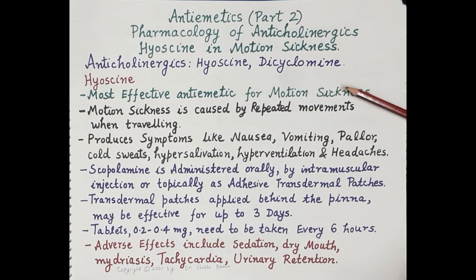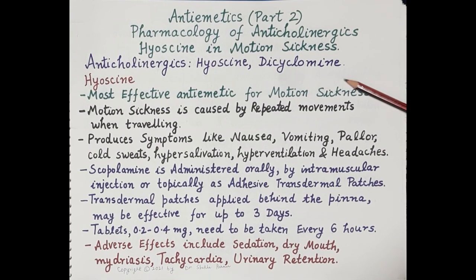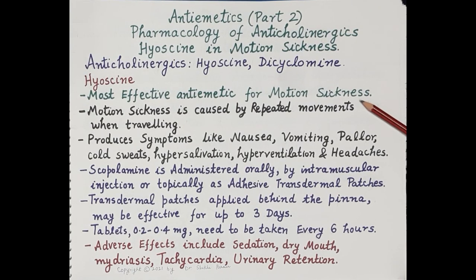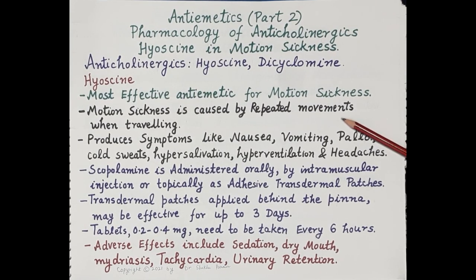Hyoscine is an anticholinergic — a non-specific muscarinic antagonist of acetylcholine at all muscarinic receptors. Hyoscine is the most effective anti-emetic for motion sickness, which is also called travel sickness. Motion sickness is caused by repeated movements when traveling, for example by train, bus, airplane, or ship.